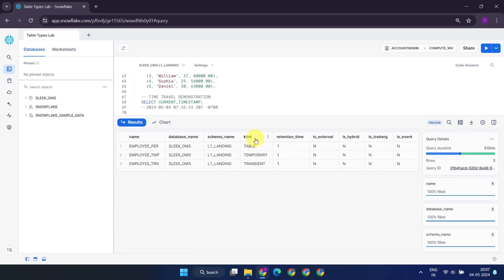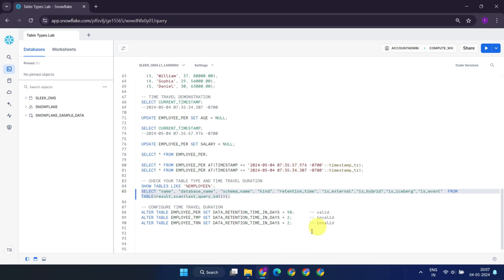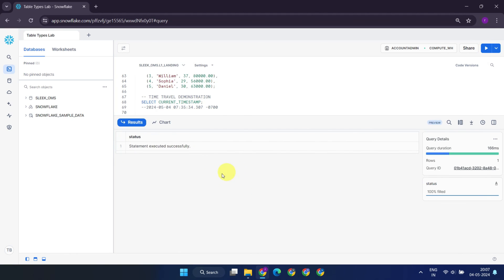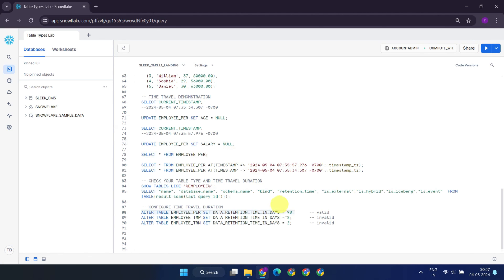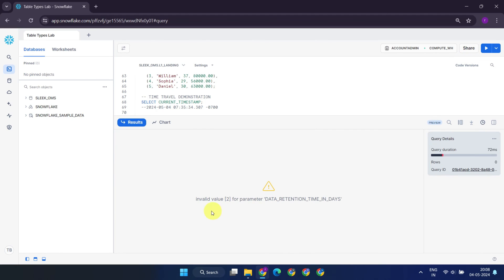Over here, kind refers to table type, while retention time denotes the duration of time travel. It's worth noting that you can customize the time travel duration for your tables. However, please remember that the maximum time travel duration for permanent tables is 90 days, whereas it's just one day for both temporary and transient tables. If you attempt to set a time travel duration outside this range, you're expected to get an error.